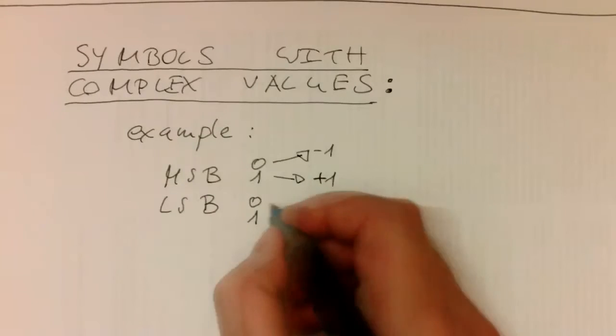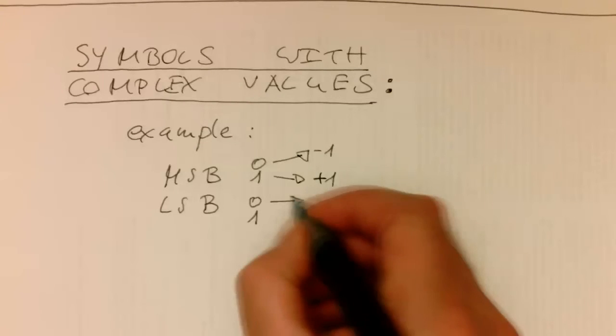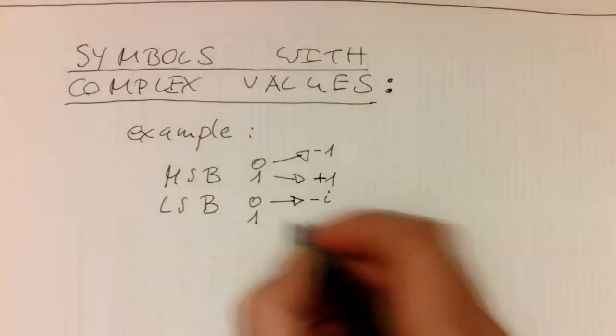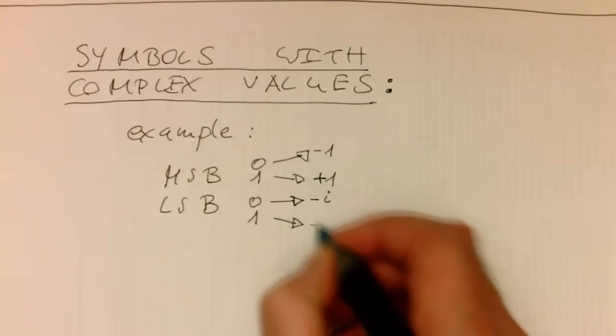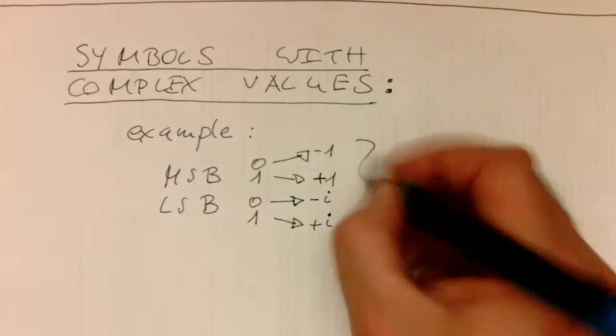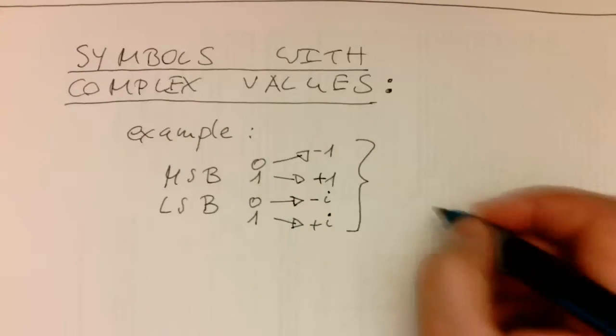But now what we do is we turn the LSB into minus i, and the LSB into plus i, and we transmit that during one symbol interval.